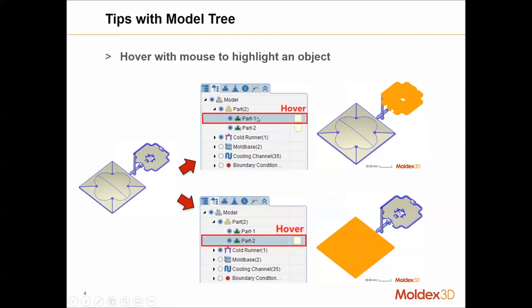One of the convenient functions is hover to highlight. When you hover your mouse on the object in model tree, the part that is hovered will be highlighted with this yellowish-orange color.